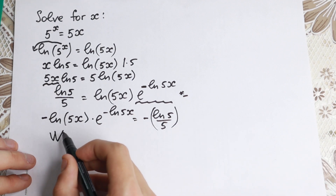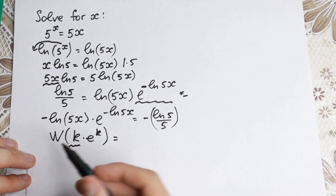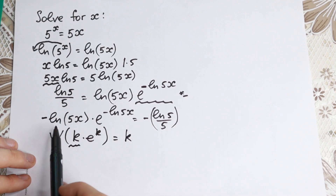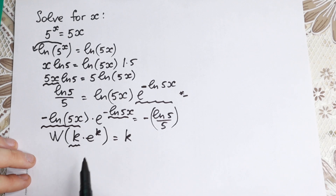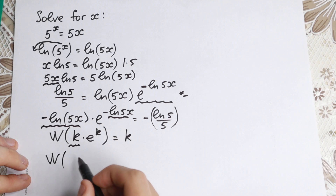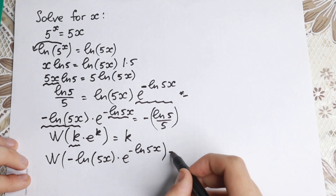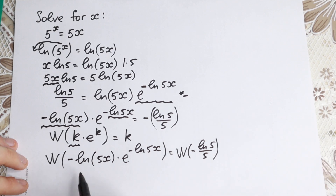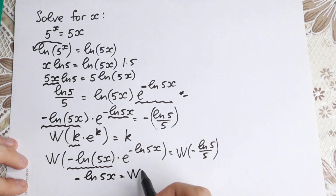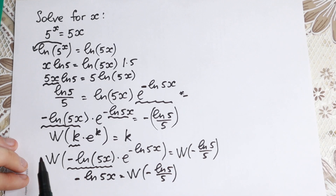This is a really good moment to apply the Lambert W function. If we have Lambert W of some key times e^(key), we get only our key back — it doesn't matter what the value is. Looking closely at our expression on the left-hand side, we have the same elements: minus ln(5x) and e^(−ln 5x) match the pattern. So applying Lambert W from both sides, minus ln(5x) times e^(−ln 5x) equals Lambert W of (minus ln 5 over 5), giving us minus ln(5x) equal to Lambert W(−ln 5 / 5). This is the main difficulty in this problem — applying Lambert W correctly.